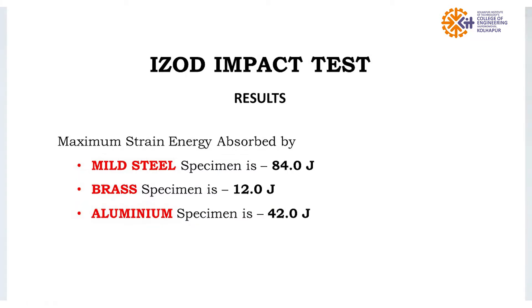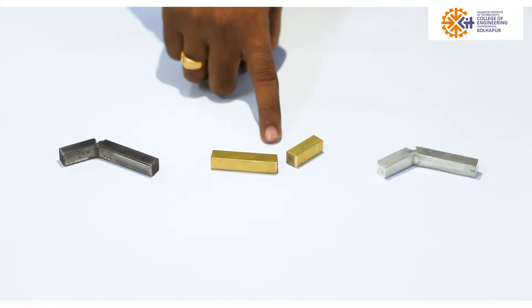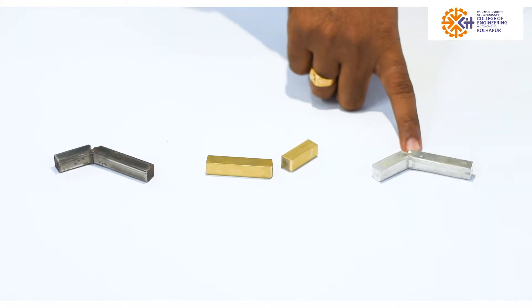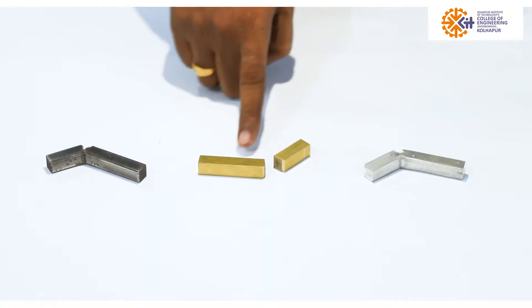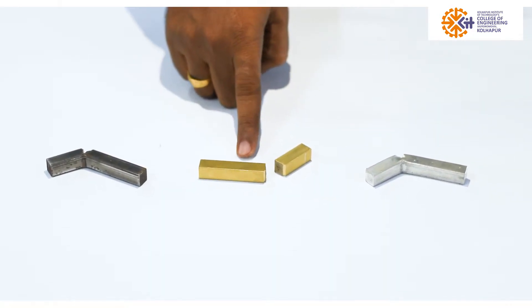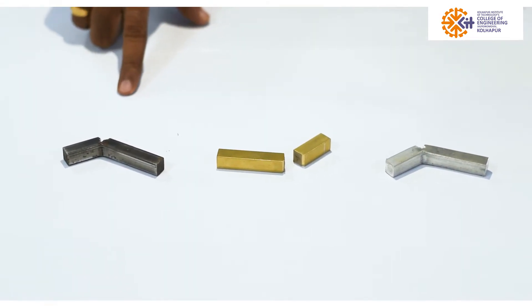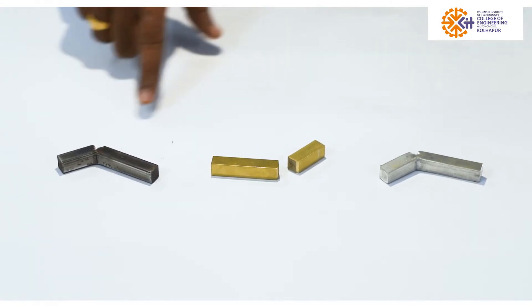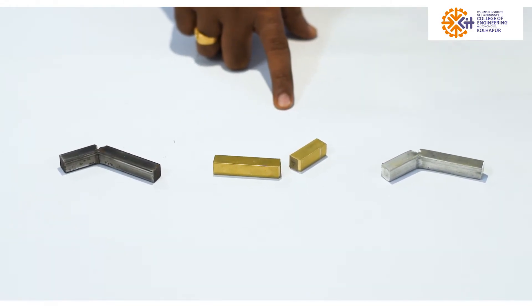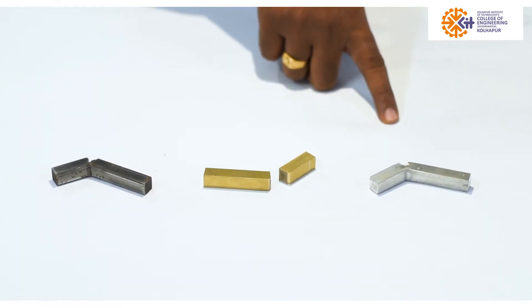These are the results of the Izod impact test and the failure patterns of the different metals. Bending takes place in the mild steel and aluminium specimens, while brittle failure takes place in the brass specimen. Among the three, the highest impact strength value is obtained for mild steel, the lowest for brass, and an intermediate value for aluminium.